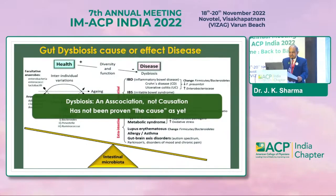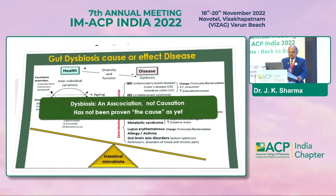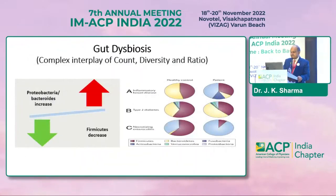Gut dysbiosis is a complex interplay of counts, diversity, and ratios. We can see that in inflammatory bowel disease, when Proteobacteria or Bacteroides increase and Firmicutes decrease, the patient's problems start compared to healthy controls.